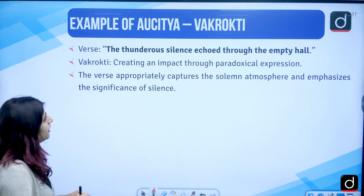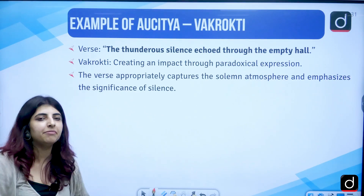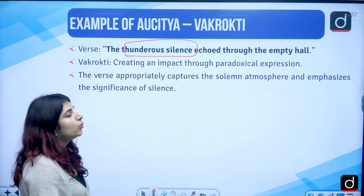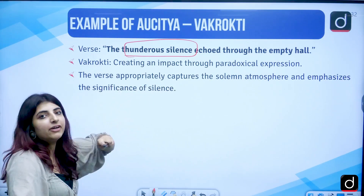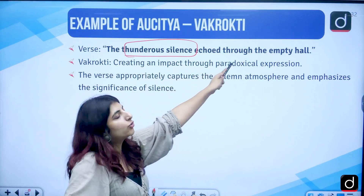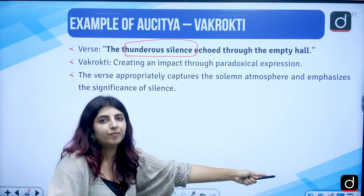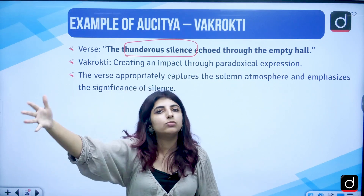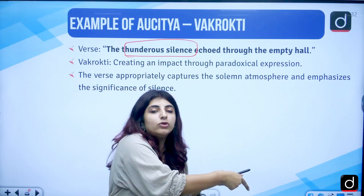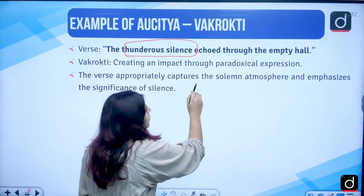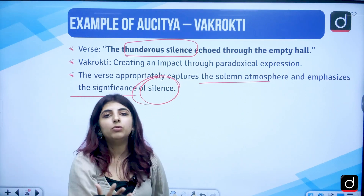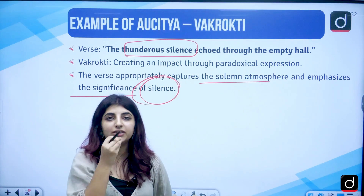Second example of Vakrokti: 'The thunderous silence echoed through the empty hall.' Here we have an oxymoron — thunderous and silence together — echoing through an empty hall, creating an impact through a paradoxical statement. How can silence echo? There is a paradox used here. It creates a solemn atmosphere and emphasizes the significance of silence — silence speaks louder than words.